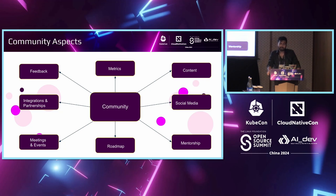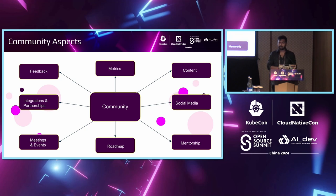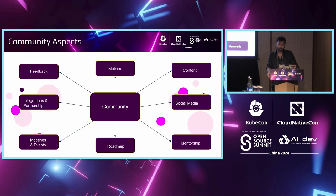Community meetings and events help you understand what the community wants. You create a platform where you listen to the community — not just on social media or Slack, but talking one-on-one, curating talks, participating in booths, or just engaging with people to understand what they're looking for from the project and how you can deliver what's required. Community meetings have been essential from the Litmus aspect as well, and we'll be talking in detail about how we have divided meetings and events.